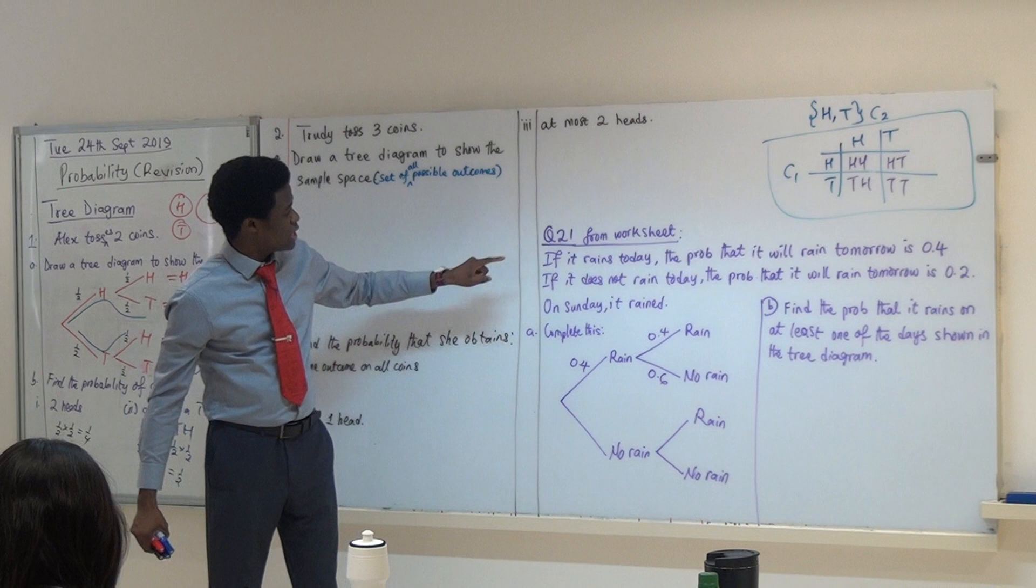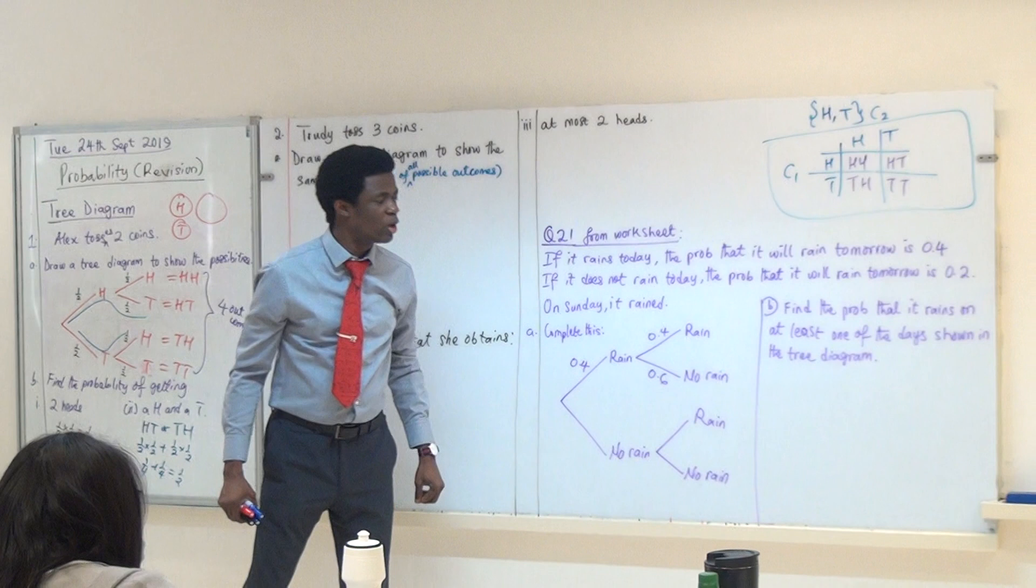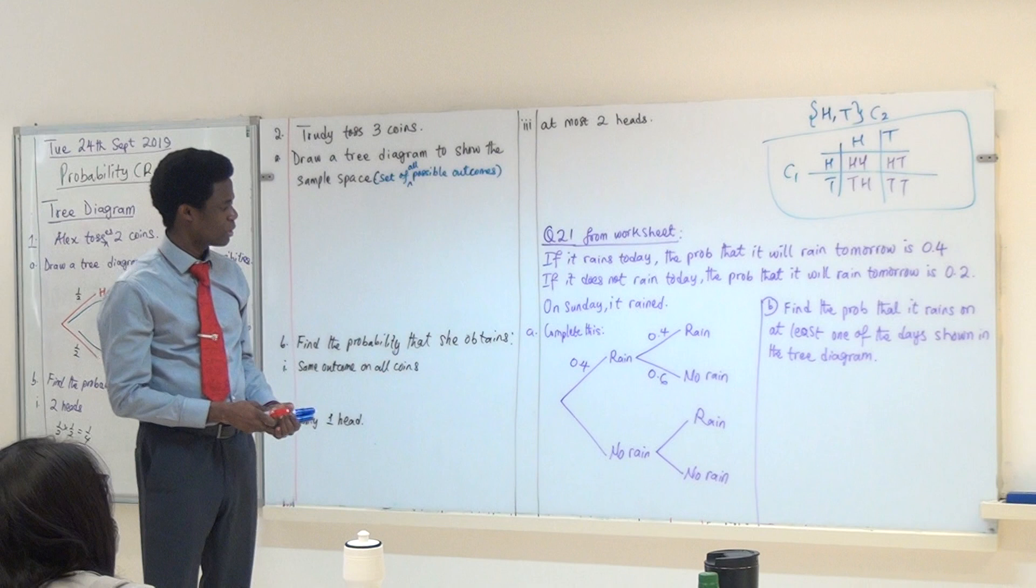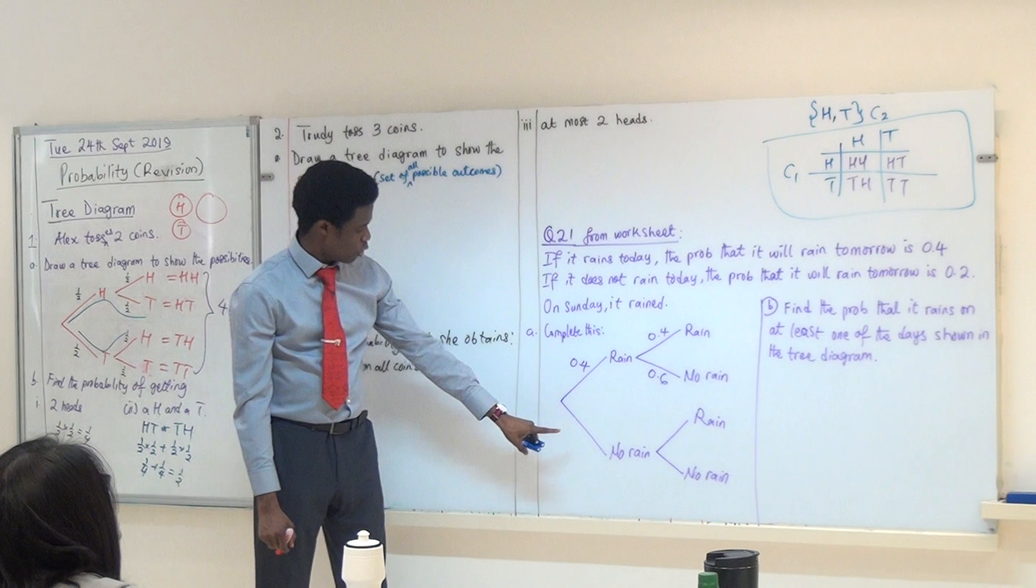Question 21 says, if it rains today, the probability that it rains tomorrow is 0.4. Question 21 is at the back page of the worksheet. And if it does not rain today, the probability that it rains tomorrow is 0.2. Can I ask you to please just look at the board first? Let's do it on the board first. Now, the first thing is to complete this tree diagram. Which means there are some values that are missing. Like this, this, and this. Okay?